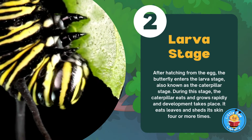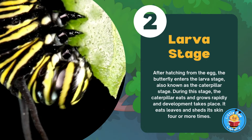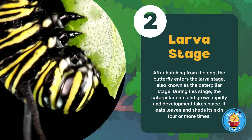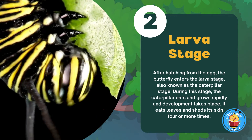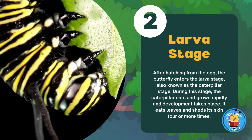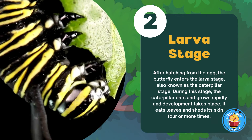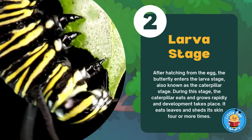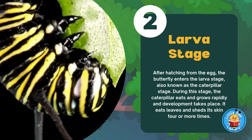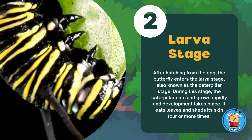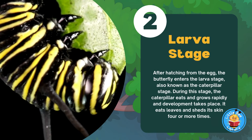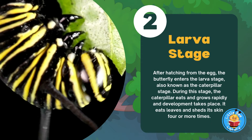Larva Stage. After hatching from the egg, the butterfly enters the larva stage, also known as the caterpillar stage. During this stage, the caterpillar eats and grows rapidly and development takes place. It eats leaves and sheds its skin four or more times.